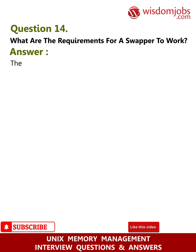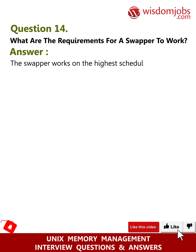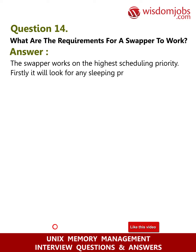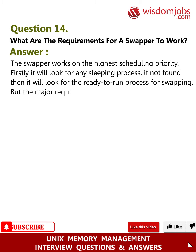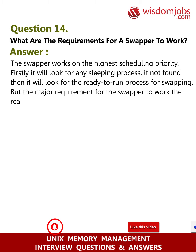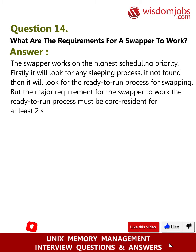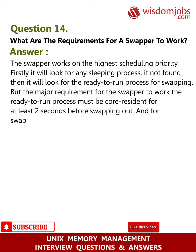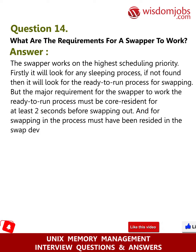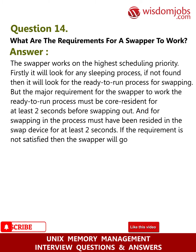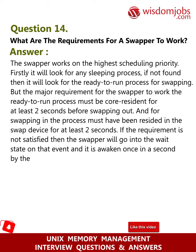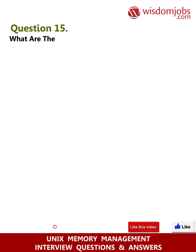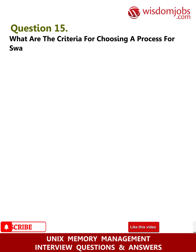Question 14: What are the requirements for the swapper to work? Answer: The swapper works at the highest scheduling priority. First, it looks for any sleeping process; if none is found, it looks for a ready-to-run process for swapping. The major requirement is that a ready-to-run process must be core resident for at least two seconds before swapping out, and for swapping in, the process must have resided in the swap device for at least two seconds. If the requirement is not satisfied, the swapper goes into a wait state and is awakened once per second by the kernel.